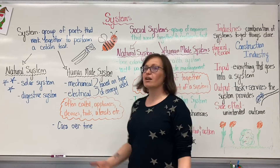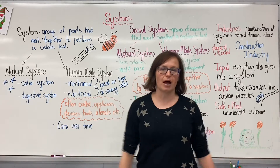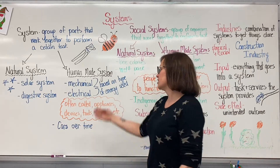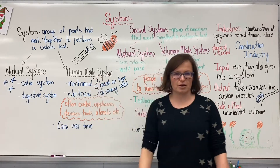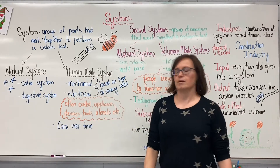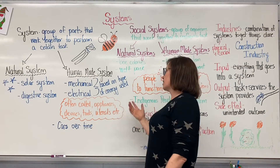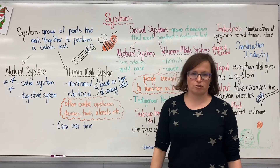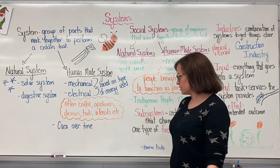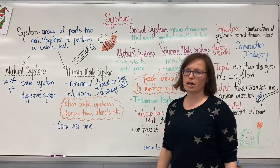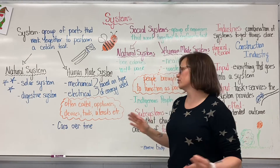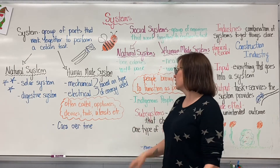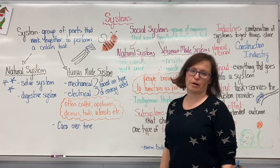Human-made systems are made by human beings. Examples would be mechanical systems and electrical systems. They're often based on the type of energy that they use — things like appliances, devices, utensils, tools, etc.